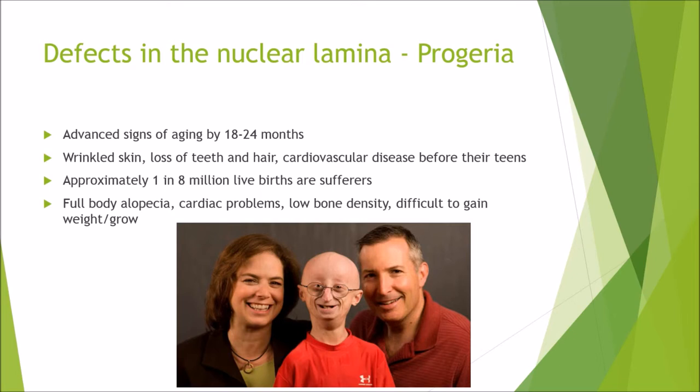A defect in the nuclear lamina results in a disease called progeria. Those with progeria get advanced signs of aging by 18 to 24 months, including wrinkled skin, loss of teeth and hair, and cardiovascular disease even before they are a teenager. Approximately one in eight million live births are sufferers. As a result, patients experience full body alopecia, cardiac problems, low bone density, and difficulty gaining weight or growing.